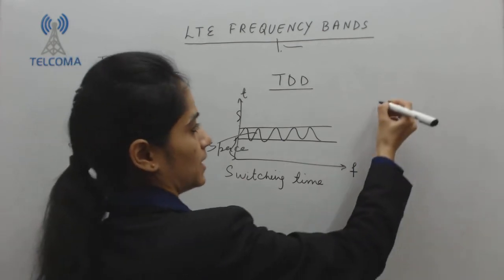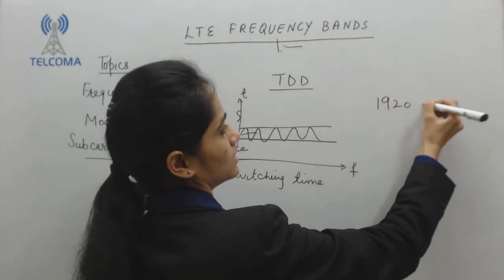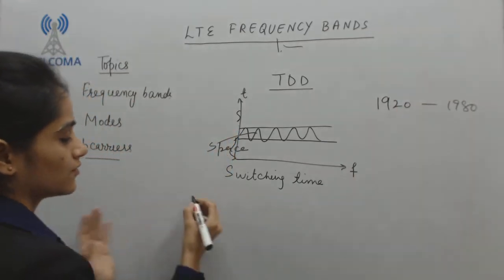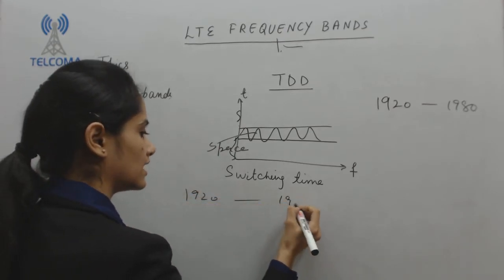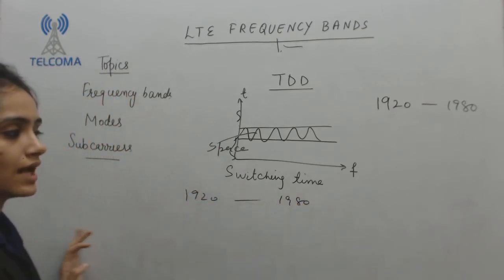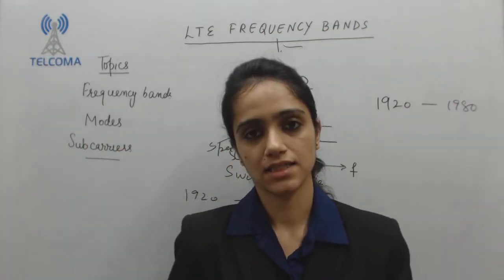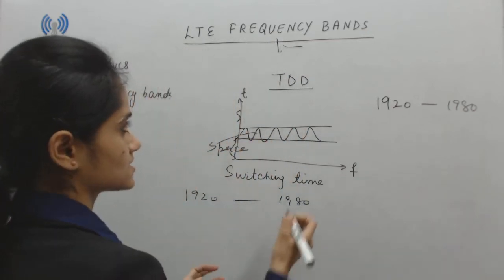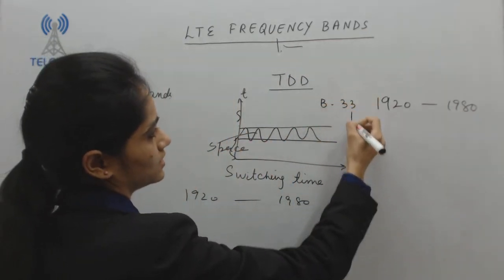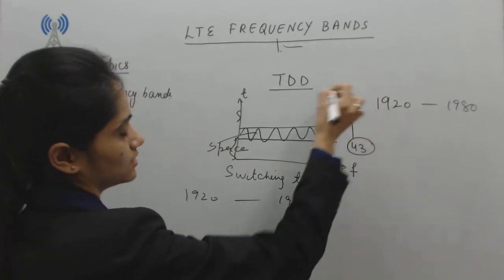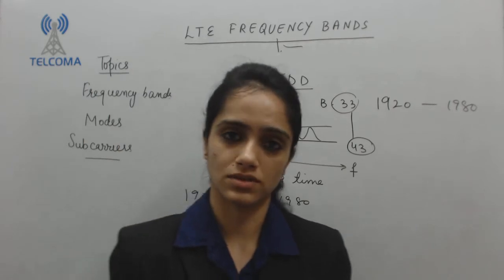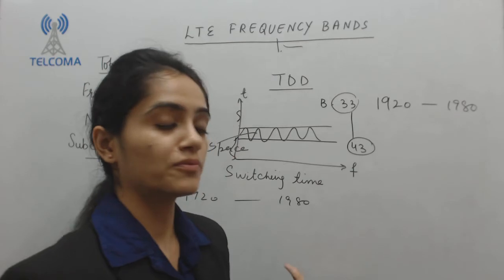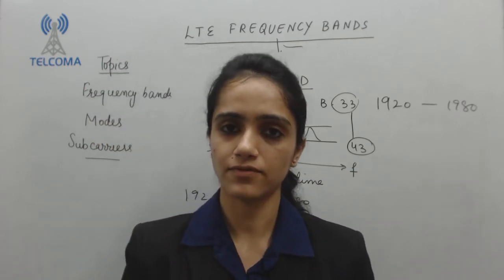In TDD mode, for example, the band 1920 to 1980 MHz — there is no frequency division. The same band carries uplink as well as downlink, but with division of time. In TDD mode we have bands from 33 to 43 available. According to the need and usage of the operator as well as user requirement, you can opt for any band and plan the frequency accordingly.